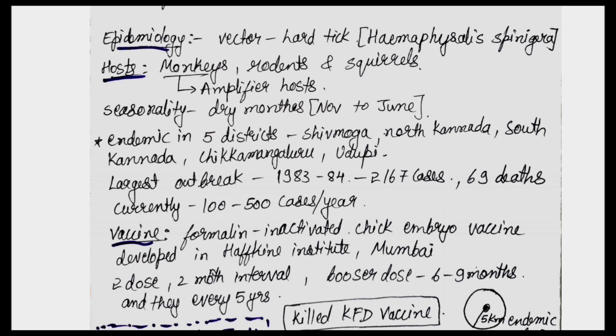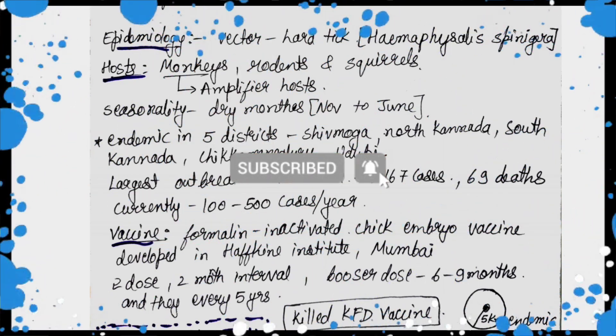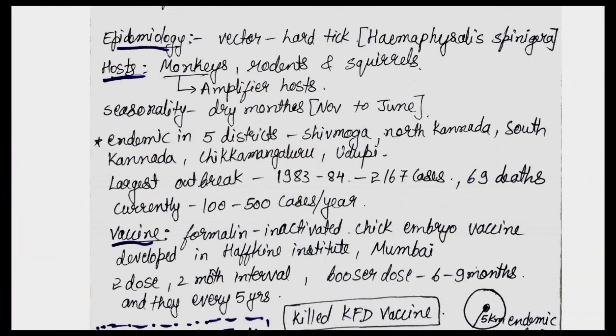Seasonality: the disease is seen most commonly in dry months, from November to June. It is endemic in five districts of Karnataka — Shimoga, North Karnataka, South Karnataka (Uttara Kannada and Dakshina Kannada), Chikmagalur, and Udupi. The largest outbreak occurred in 1983–1984, with 2,167 cases and 69 deaths. Currently, 100 to 500 cases per year are seen.